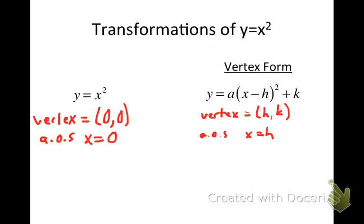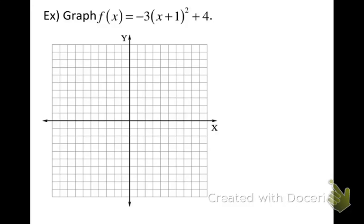You're going to see vertex form equations and find it's very easy to identify where the vertex is. If you can identify the vertex and the axis of symmetry, it's going to be very easy to graph quadratic equations. Let's try an example. We're going to graph y equals negative 3 times (x + 1)² + 4. Whenever I'm working with vertex form equations, I want to identify the values of a, h, and k.